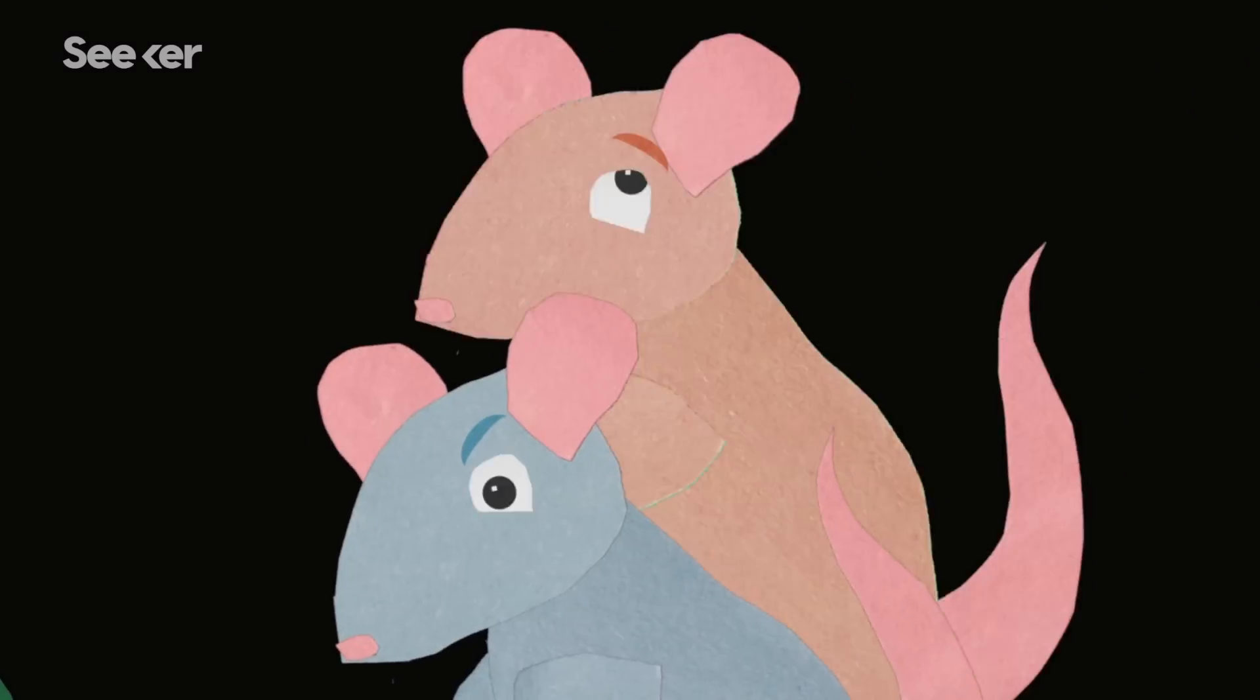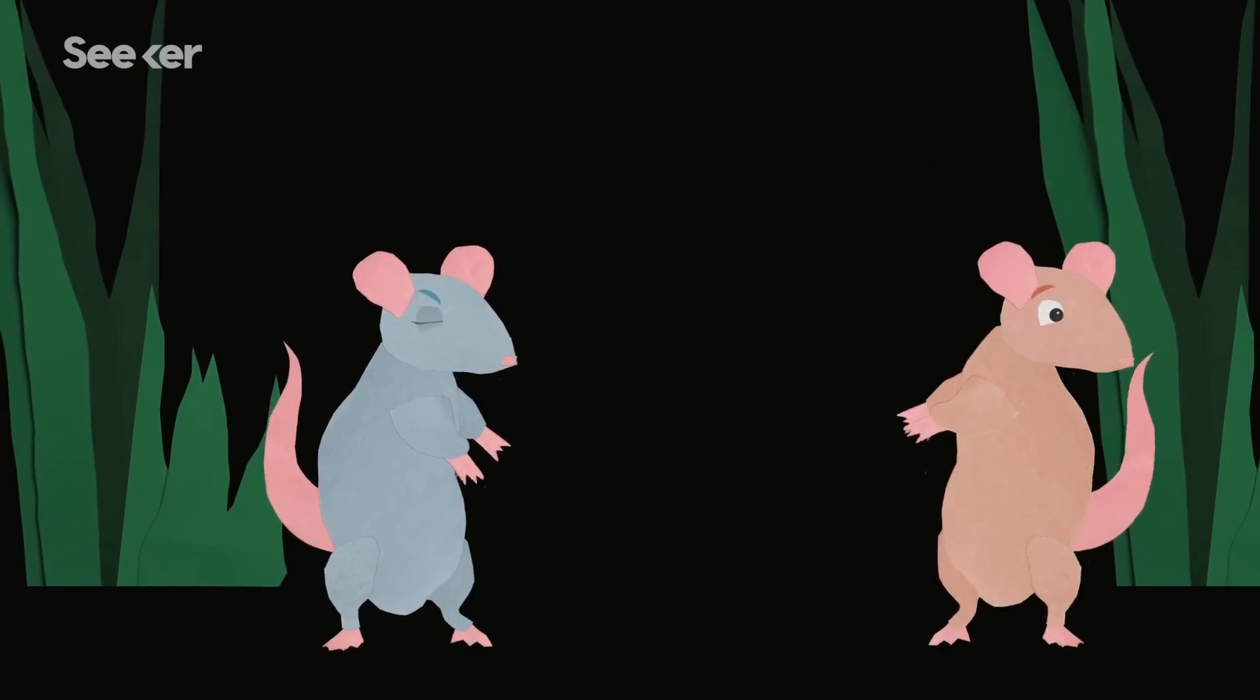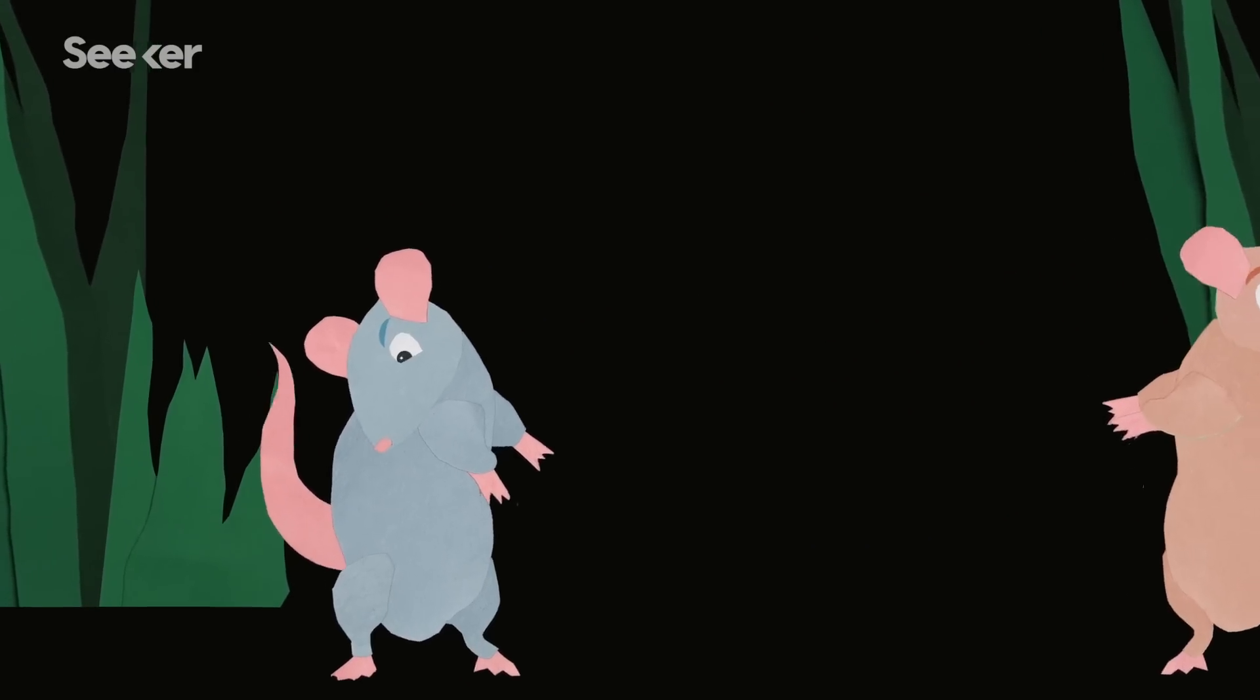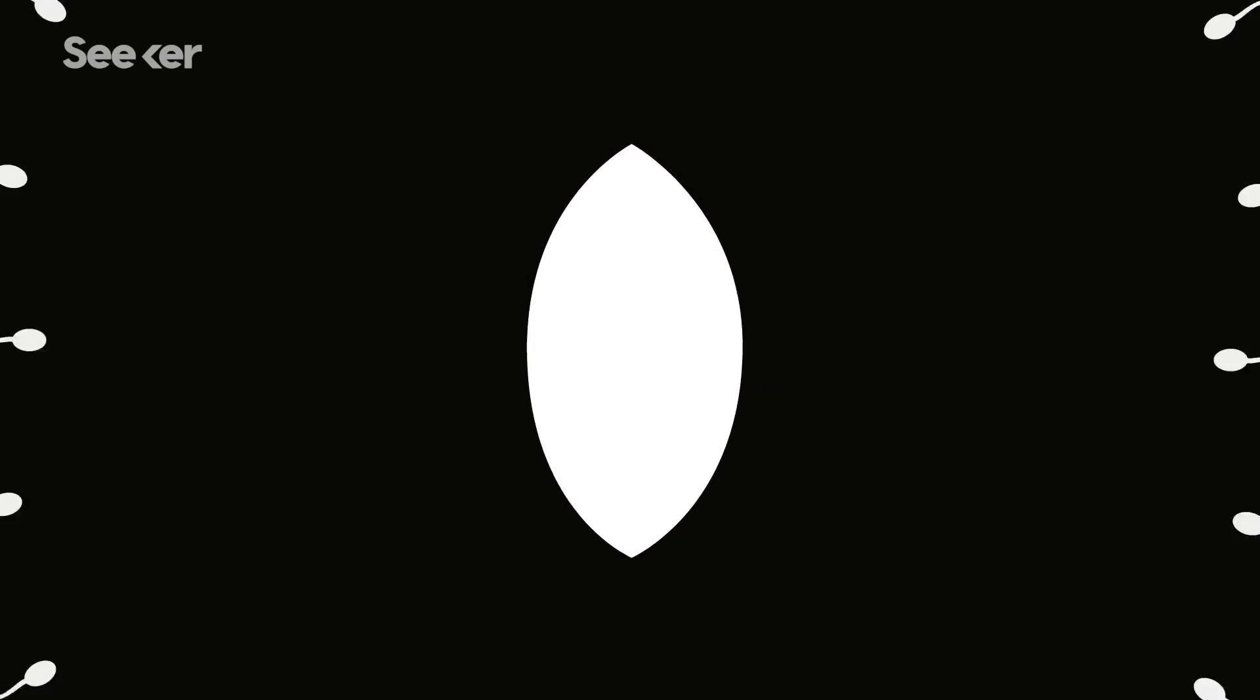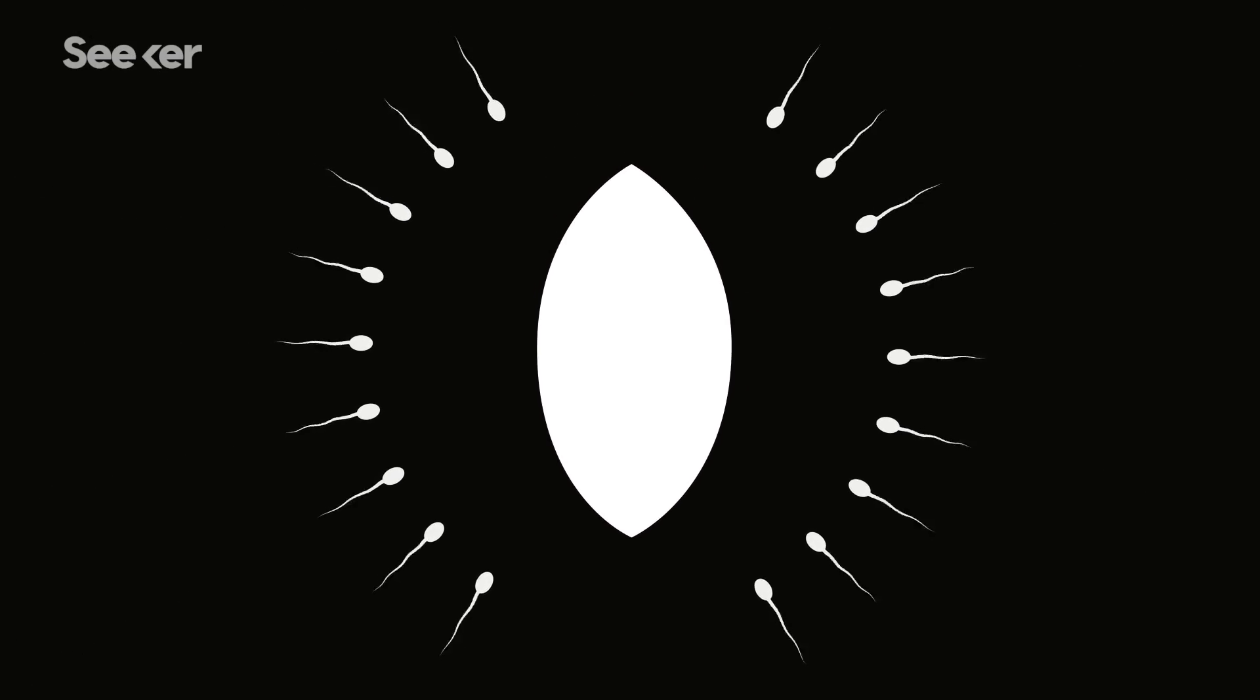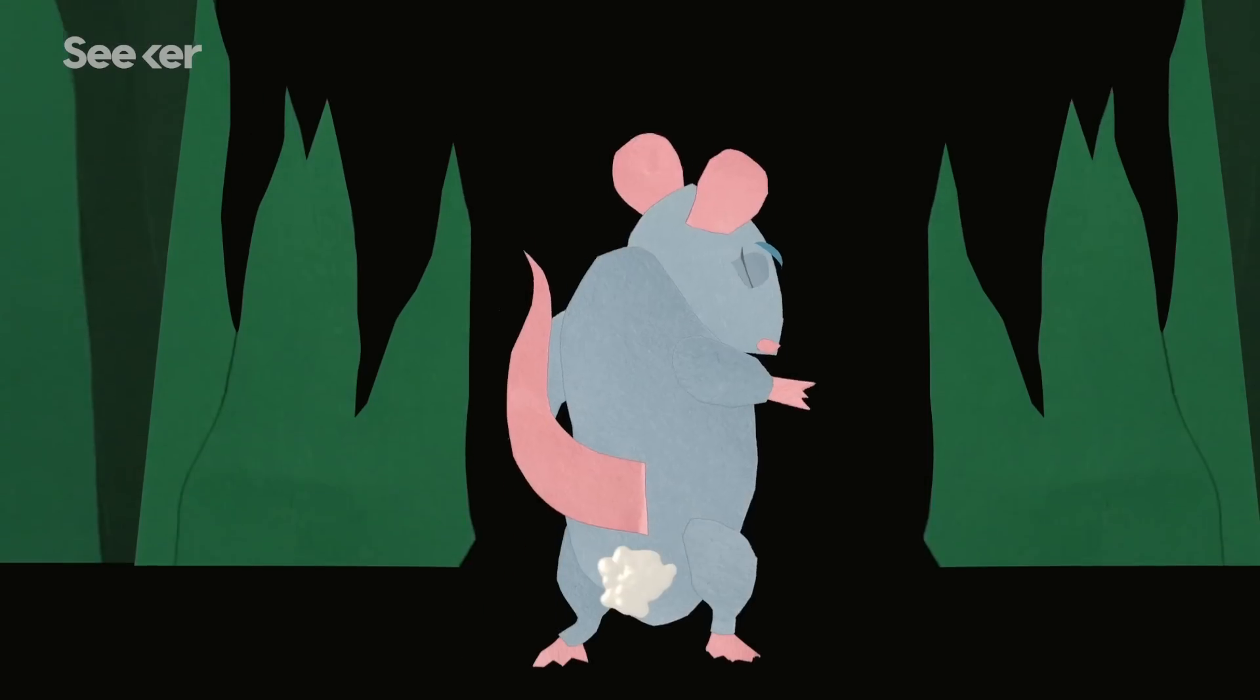When a rat ejaculates, in addition to sperm, he will deliver an amorphous material with a very sinister function. This blobby gel-like plug starts off in liquid form and fills a female's vagina, blocking it off to minimize sperm competition from other males, basically sealing the deal.